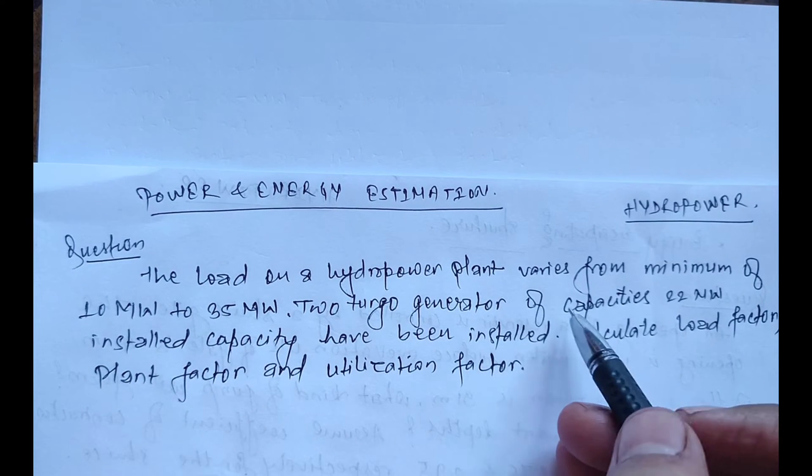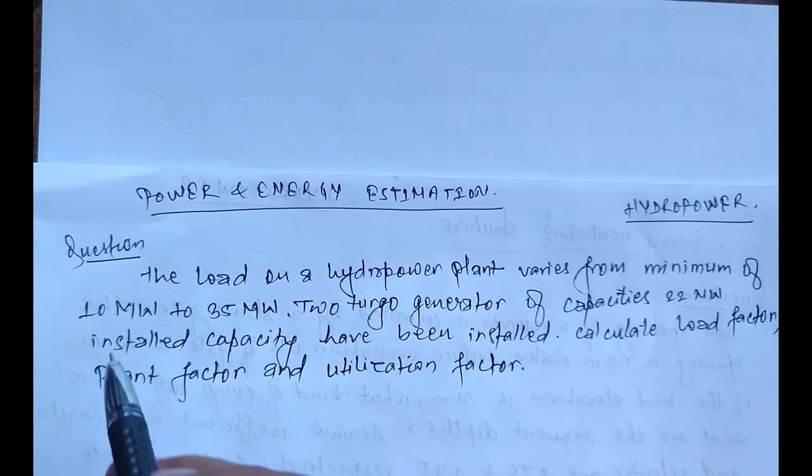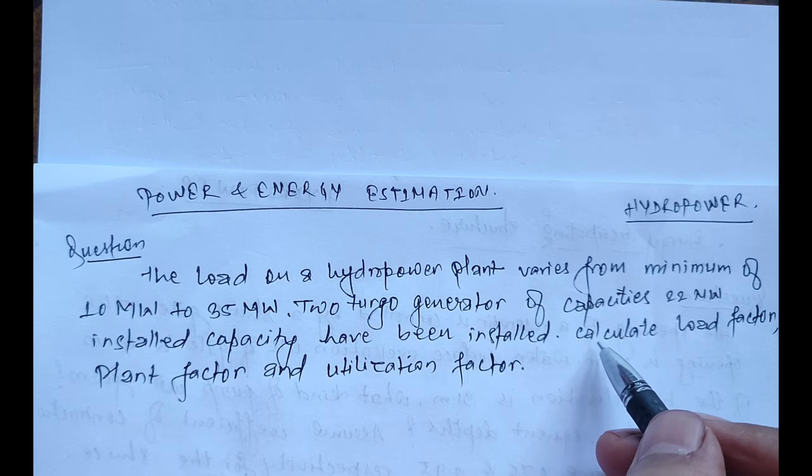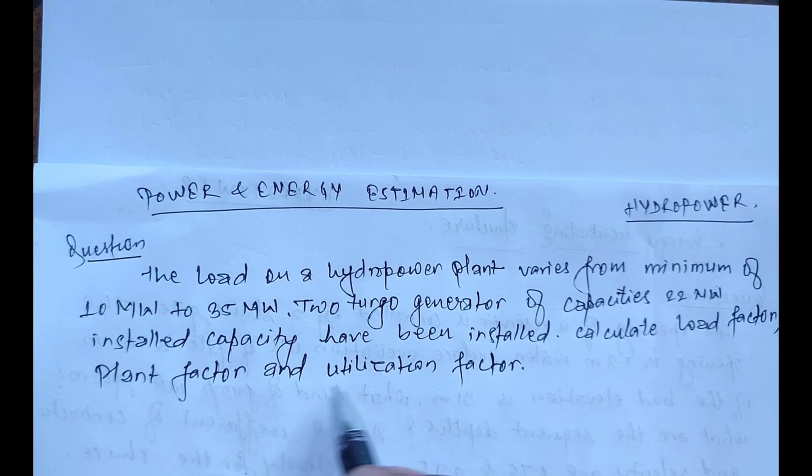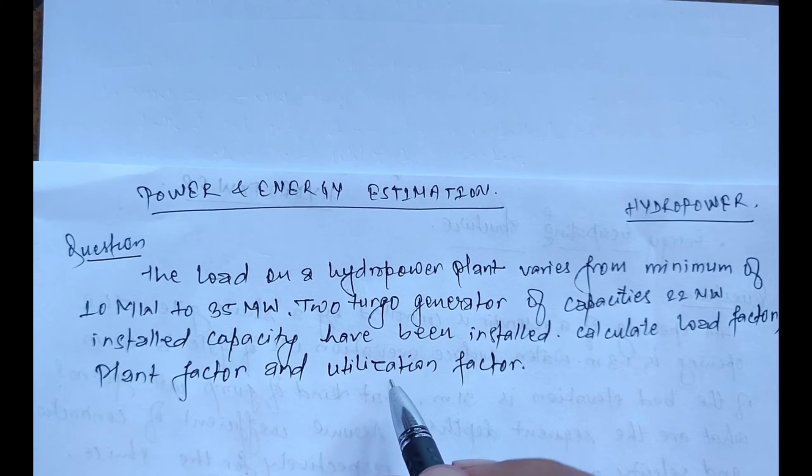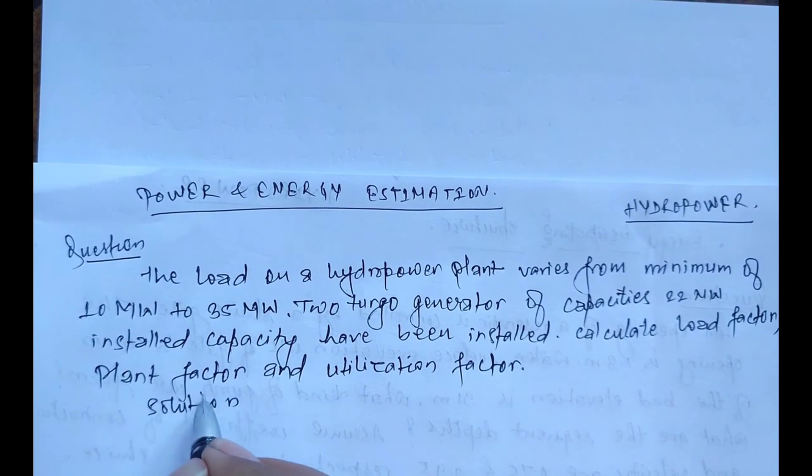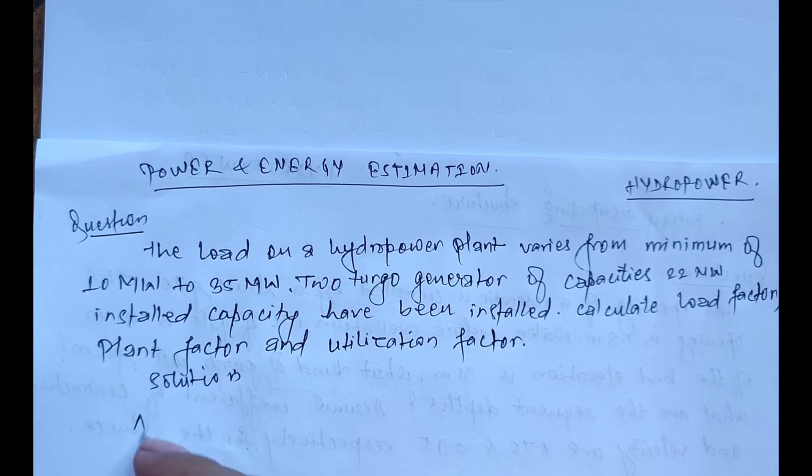where two turbo generators of capacity 22 megawatts installed capacity have been installed. We have to calculate load factor, plant factor, and utilization factor. So let's calculate it. First, we will calculate the average load.